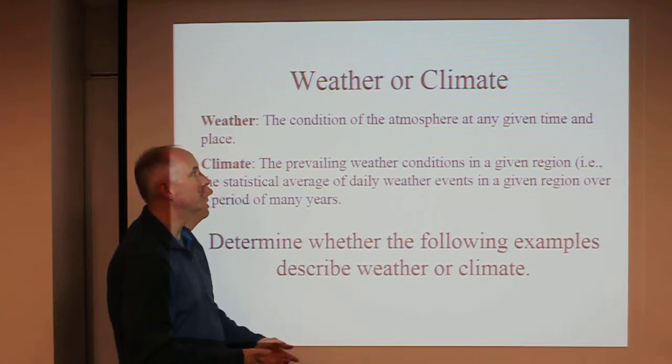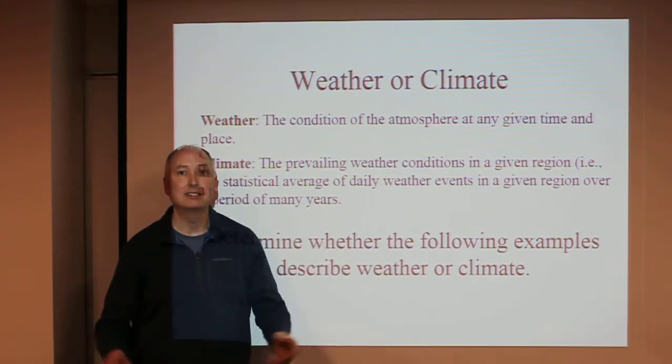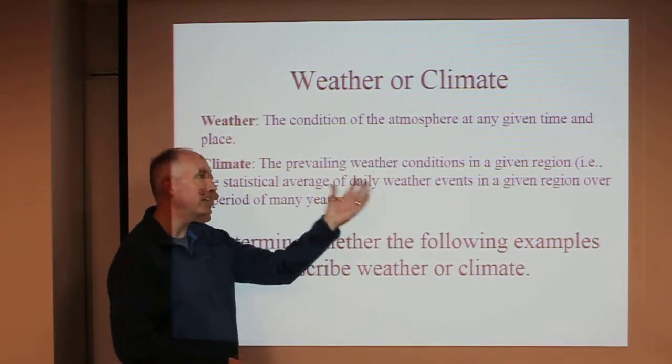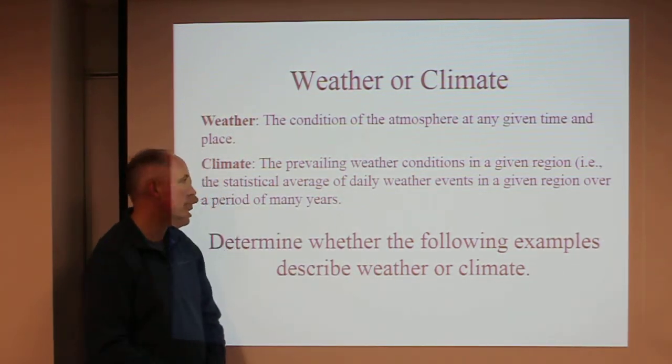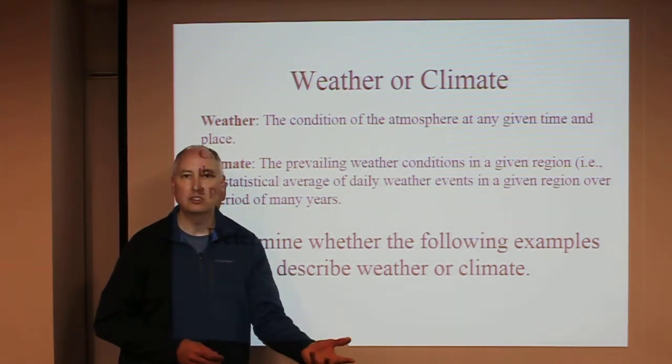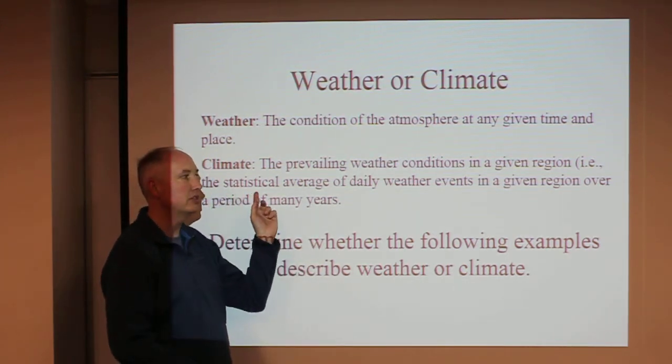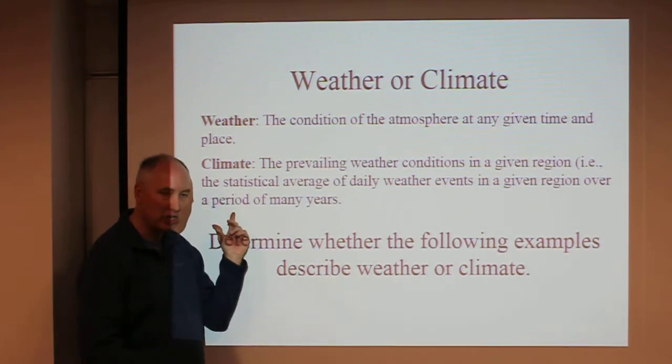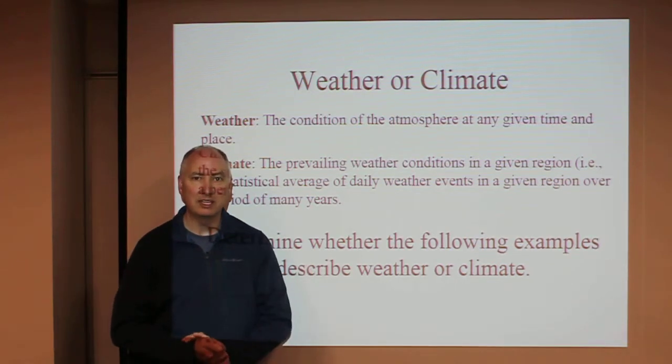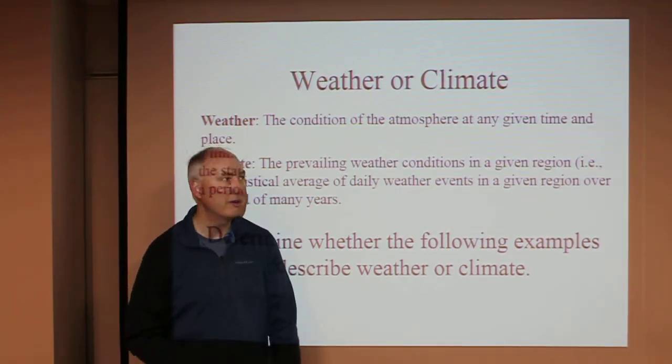Climate, on the other hand, is what you would expect to be outside. It's the prevailing weather conditions of a given region, which includes not only the average temperature, humidity, and precipitation, but also the statistical variation of those things—how much variability you have in temperature and precipitation.